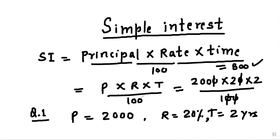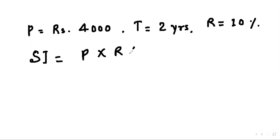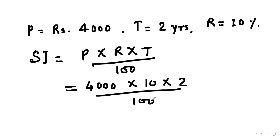Let's take the next example. We are given principal rupees 4000, time 2 years, and rate 10 percent. Now we apply the formula: SI = P × R × T / 100. We put the values: P is 4000, rate is 10, and time is 2, divided by 100. So we get 800 rupees.